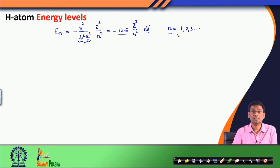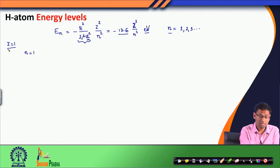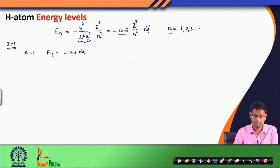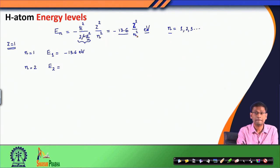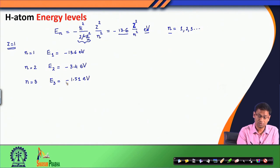The lowest possible value of n is 1; we discussed why n equals 0 is not allowed in our last lecture. For hydrogen atom, Z equals 1. When I put n equals 1, this energy level E₁ turns out to be simply minus 13.6 electron volt. If I use n equals 2, the second energy level I get as minus 13.6 divided by 4, which is about minus 3.4 electron volt. When n equals 3, E₃ turns out to be about minus 1.51 electron volt. Please note that all these numbers are negative because of the negative sign in the expression.